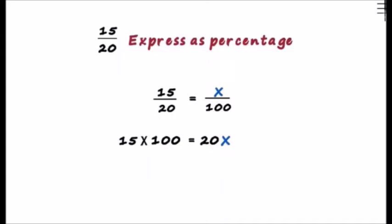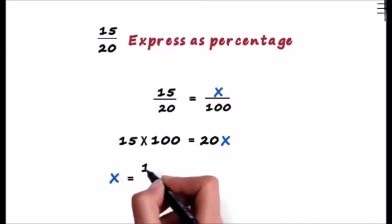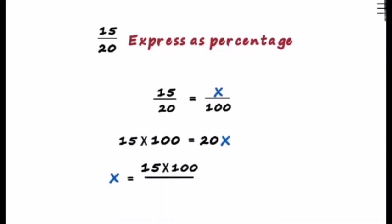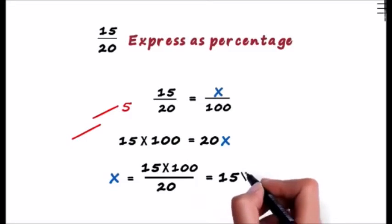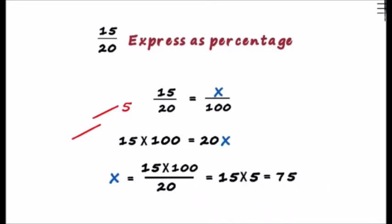Transposing 20 to the other side, we write x as 15 into 100 by 20. 100 divided by 20 is 5, and hence x is equal to 15 into 5 which equals 75. Hence 15 by 20 is equal to 75 by 100, and that is equivalent to 75%. This was the concept how we converted into percentage form.